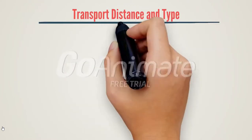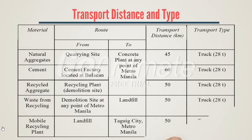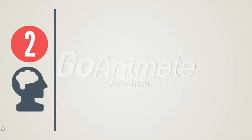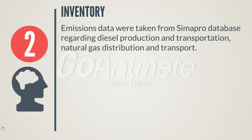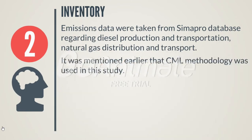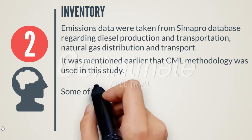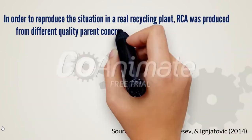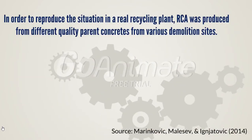This is the summary of source and transport distances of the materials. Emissions data were taken from the CIMICRA database regarding diesel production and transportation, and natural gas distribution and transport. The CML methodology was used in this study. Some of the environmental impact categories considered in the assessment were global warming, eutrophication, acidification, photochemical oxidant creation, and others.